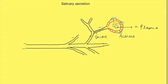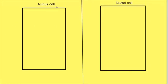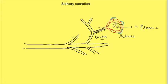Acinar cells form a primary salivary secretion which is very similar in composition to plasma — the electrolyte composition of the salivary secretion is almost the same as that of plasma. As the formed salivary secretion travels through the duct, ductal epithelial cells make changes to its composition. We will now see at the cell level how acinar cells secrete salivary secretion, with the right side showing the basolateral side and the left side the luminal or apical side.